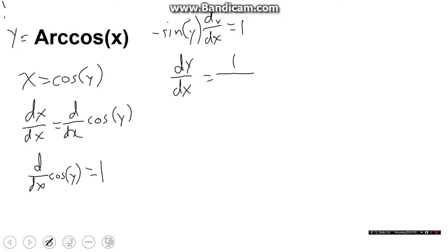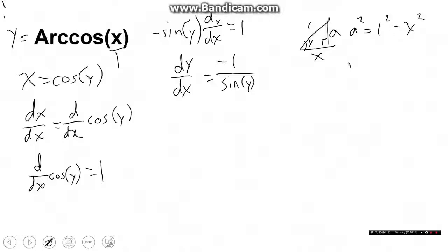Then we're going to do the same concept using the right triangle. That angle is y, that is a right angle. This time it's a cosine, so angle y has the ratio x over 1, with x being the adjacent and 1 being the hypotenuse. The opposite side is a, and we know that a squared equals 1 squared minus x squared, so a equals the square root of 1 minus x squared. Sine of y is opposite over hypotenuse, which is just a. So we substitute that, and that gives us dy over dx equals negative 1 over the square root of 1 minus x squared.